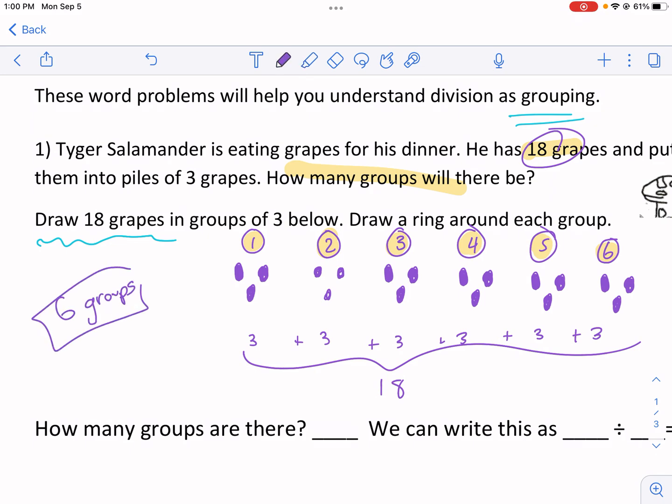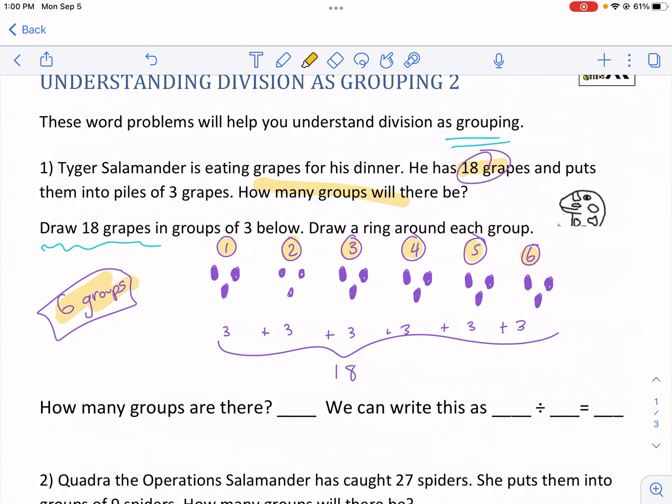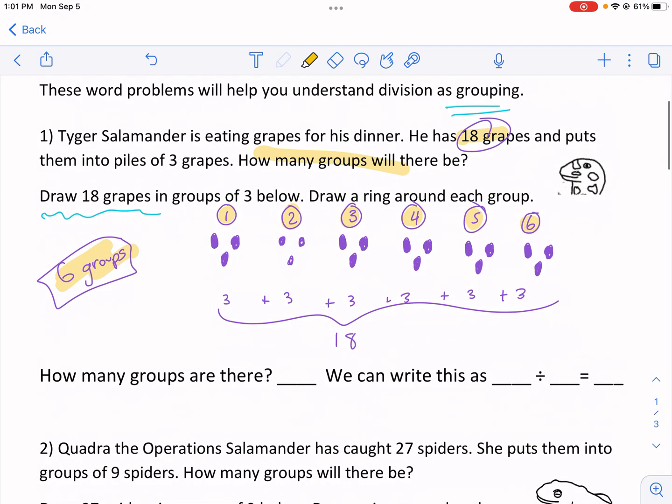If we're going to divide each group into three, we need six groups to get the job done. So let's say he's going to eat three grapes per meal. That means he could have six different meals. That's like planning ahead.